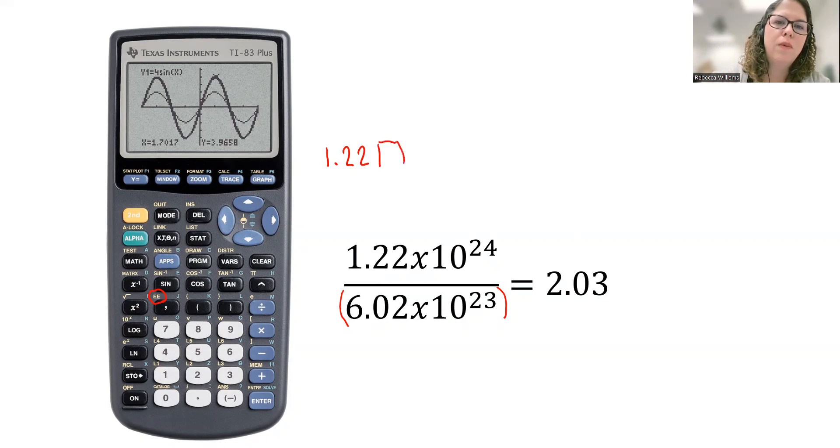I would push 1.22 second comma, which is where your EE function is, and then 24th. Notice I did not push a times button. I did not push a 10 in there anywhere. That is going to put the numerator into your calculator correctly for you.